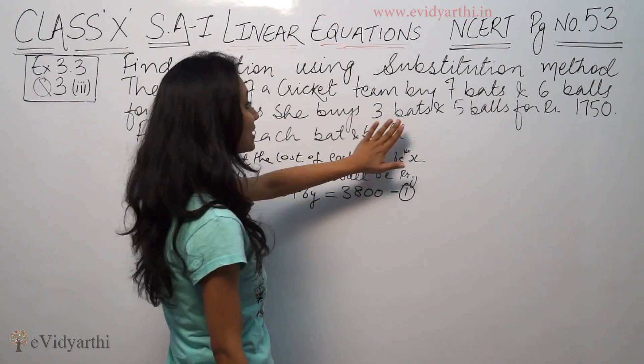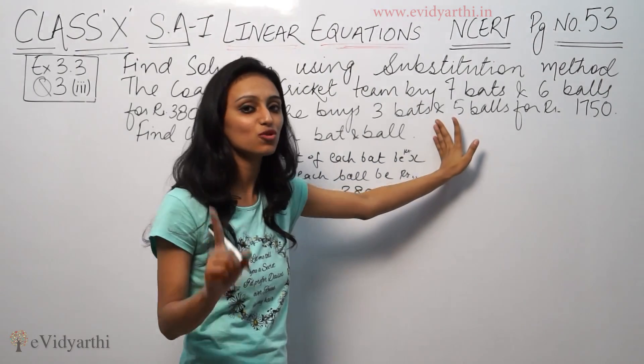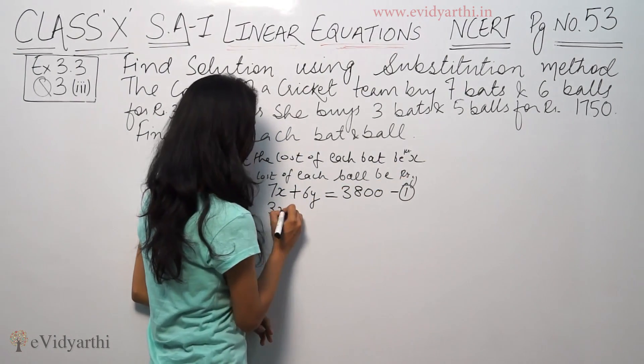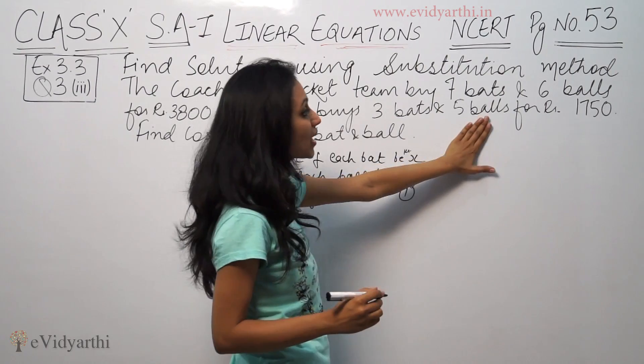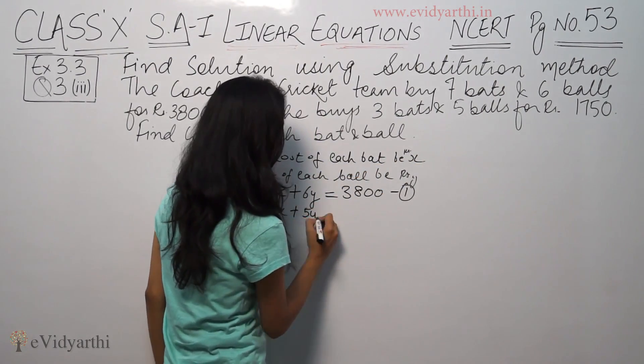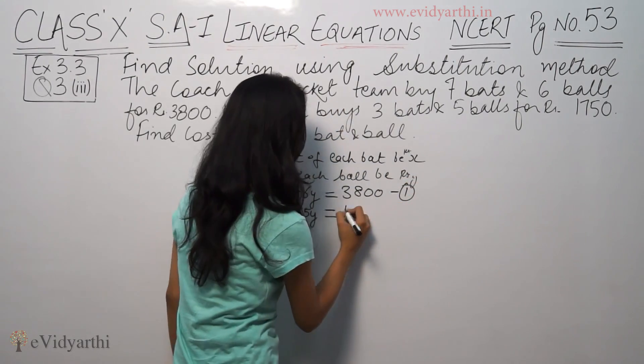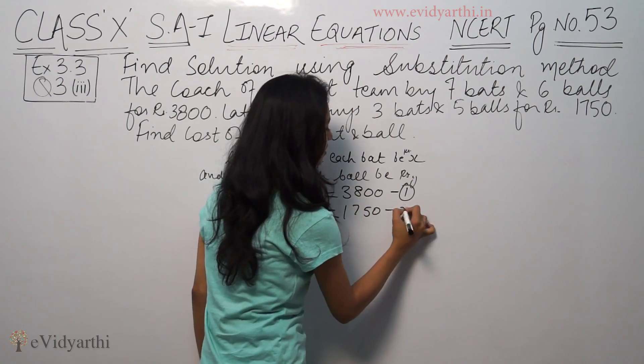Second equation: the coach buys 3 bats and 5 balls. 3 bats cost 3x, and 5 balls cost 5y. So 3x plus 5y equals 1750. So this is equation 2.